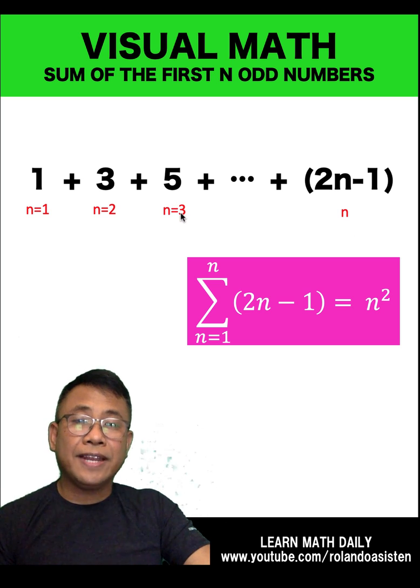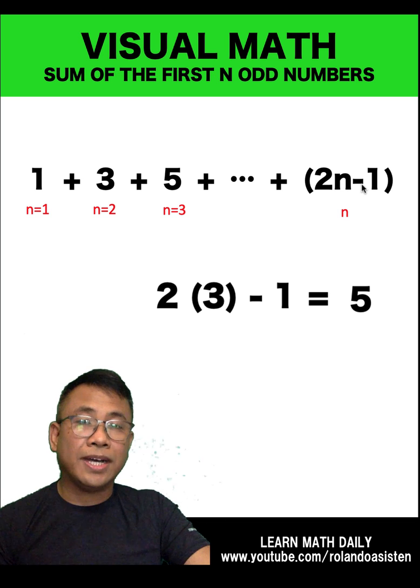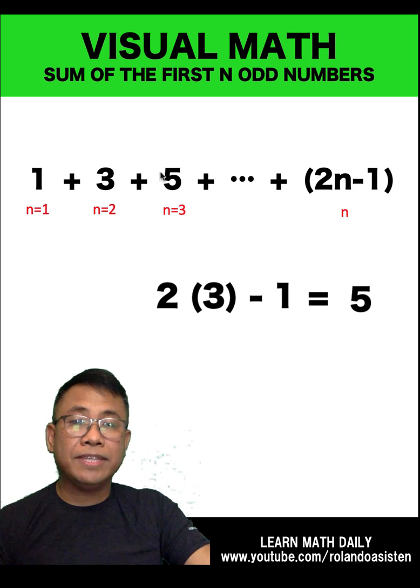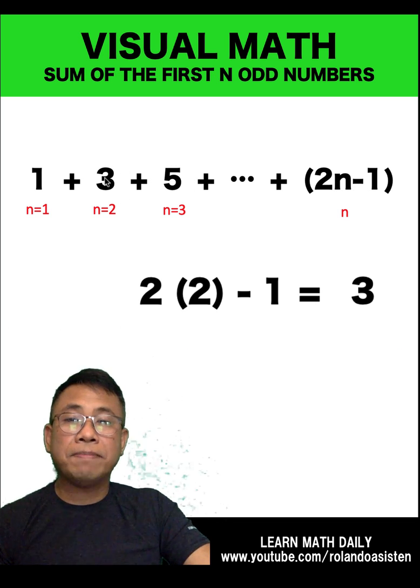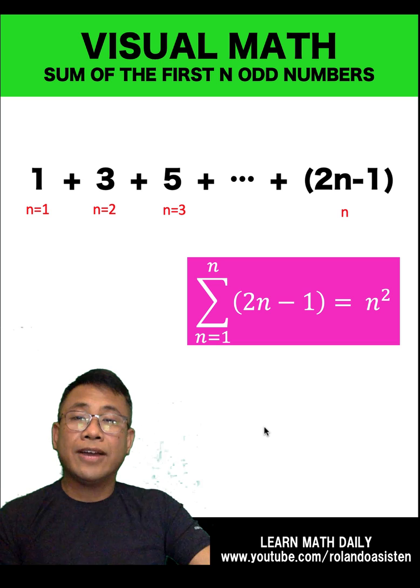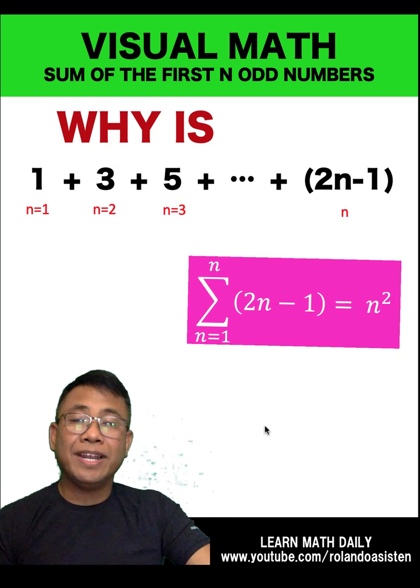So, if n is 3, the form 2 times n becomes 2 times 3 minus 1, which is equal to 5. That's why we have this 5. And to get this 3, this is represented as 2 times the value of n, which is 2. 2 times 2 is 4 minus 1 is 3. So, the main question now is, why is this the formula? Let's investigate.